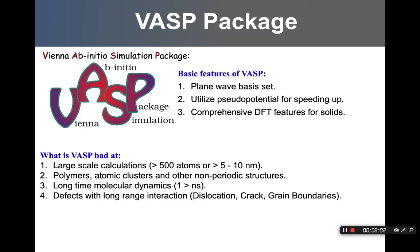Secondly, VASP uses pseudopotentials to speed up the overall numeric solutions. The reason is that it assumes the inner electron states will not be influenced by whatever structure they're trying to form — they are basically inert electrons. Based on this assumption, you can pre-calculate the electronic states of those inner electrons. That saves a lot of calculation effort, because what you're solving on the fly would only be the valence electrons of the solid.